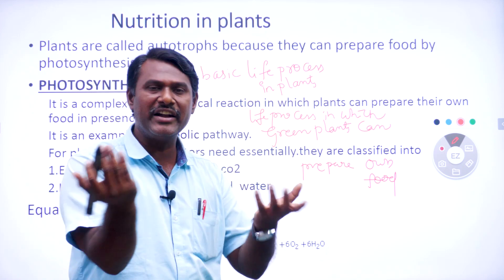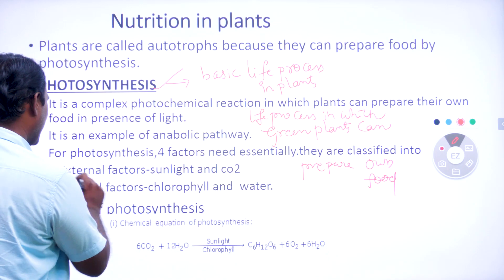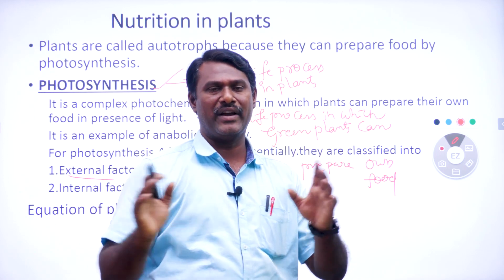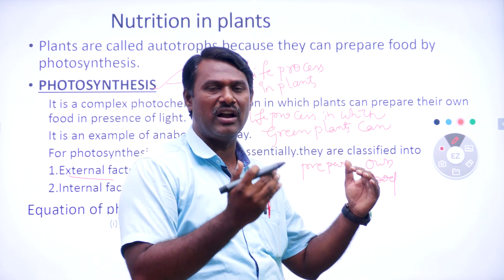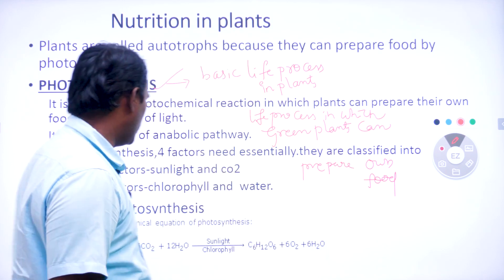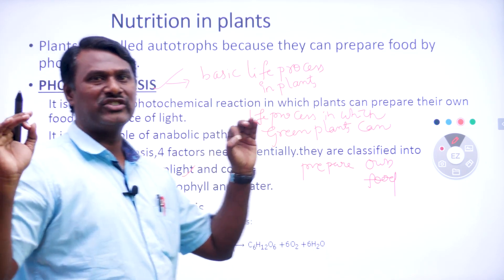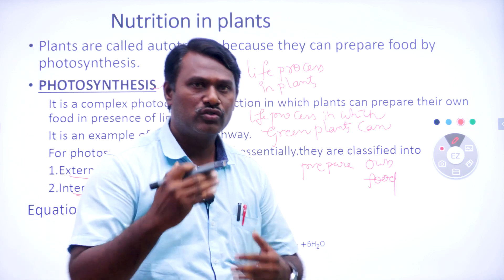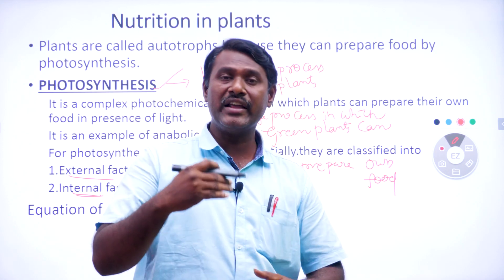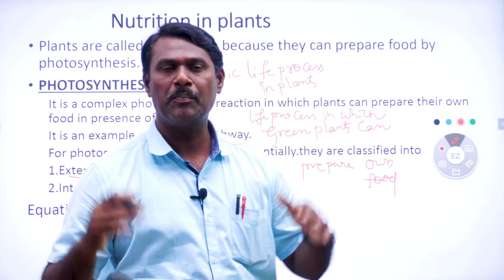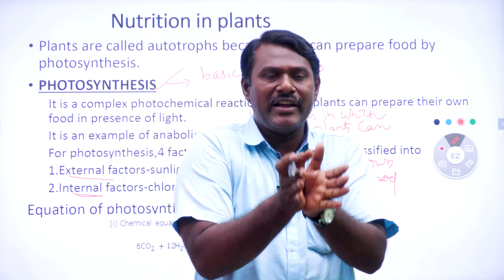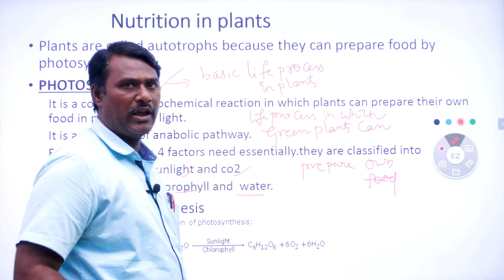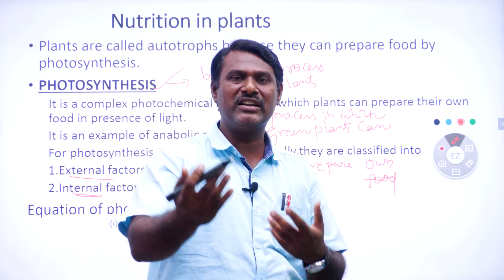These four factors are classified into external factors and internal factors. External factors are the components which come from outside to inside of the plant. These external factors include carbon dioxide and sunlight — the two external factors essentially required for photosynthesis. Internal factors are the components which are already associated with the plant or plant parts, and these include chlorophyll and water.